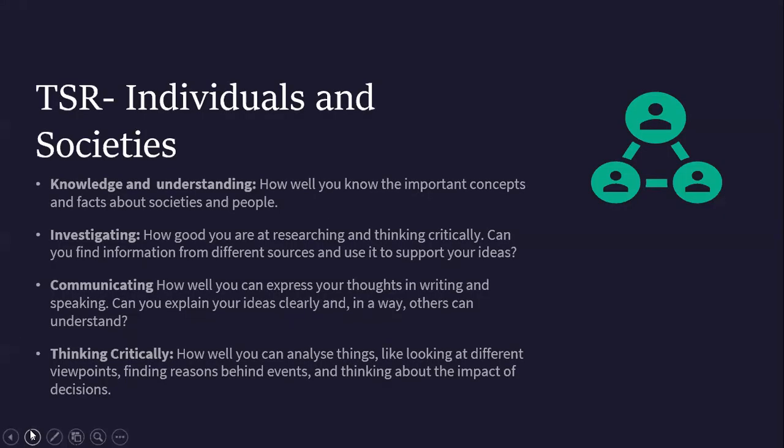To explain this a little bit more: in terms of the TSR, which is the task-specific rubric, Individuals and Societies is divided into four criteria or objectives, and each criterion has specific strands. The first criterion is known as Criterion A: Knowledge and Understanding. It focuses on how well you know the important concepts and facts about societies and people, and this reflects directly to your unit. For instance, if I ask you to define the term 'consumerism,' this is directly related to the context discussed in class — it indicates your ability to explain a specific term or determine a specific concept that is evident from the material.